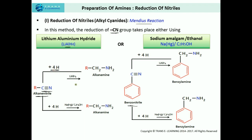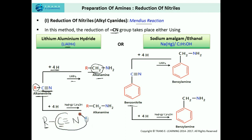Reduction means addition of hydrogen in presence of some reducing agents. The cyanide used in this reaction has just one alkyl group. In the presence of hydrogen gas and lithium aluminium hydride, or sodium amalgam in presence of ethanol, an amine is formed having one carbon atom more than the parent cyanide. You might think there are two carbon atoms, but this carbon is attached to the nitrogen atom through a triple bond, representing the cyanide group — it is not part of the carbon chain.